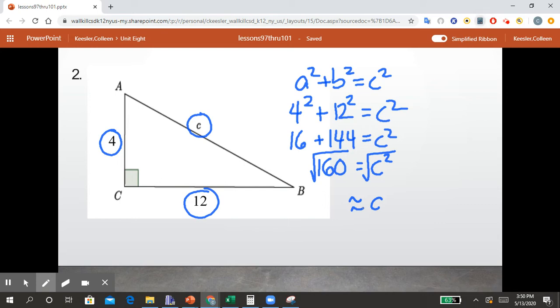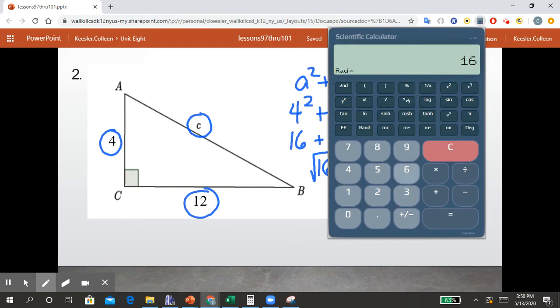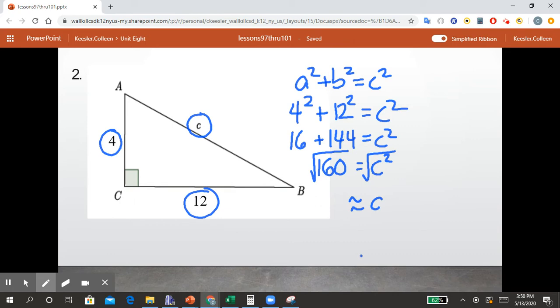So we're going to take our calculator, do 160 square root, and we get 12.649. Now in the directions, it said to round to the nearest tenth. So we're going to leave this as 12.6 because the 4 after the 6 doesn't require us to round up. So we can say that C is approximately 12.6 units. That symbol there instead of the straight across lines for equals means approximately. Let's try another.